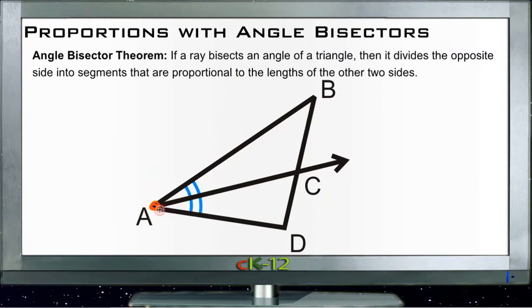That ray then can go off to the other side of the triangle. There are a number of ways we can say that it bisects this other side over here between B and D, or that it bisects the angle A, or any number of things. But in this case, we're going to talk about it bisecting angle A.